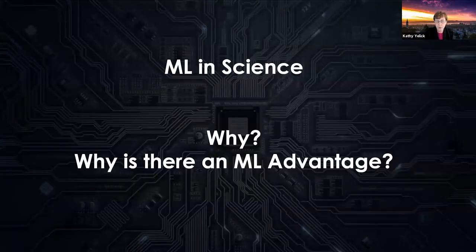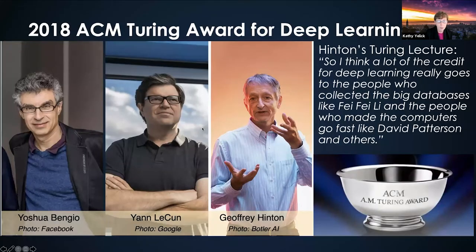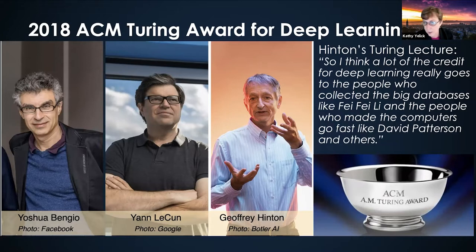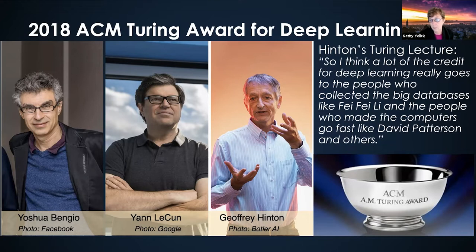Why is there a machine learning advantage in science? I'll quote from Jeff Hinton's Turing Award lecture, where he said that a lot of the credit for deep learning's success really goes to the people that collected the large data sets — like Fei-Fei Li — and the people who made the computers go fast — like David Patterson and others. The success of deep learning was really the combination of faster computers and understanding how to take advantage of those computers — mapping things like dense matrix multiply and narrow precision arithmetic onto these computers to get orders of magnitude speedup over the last couple of decades — plus labeled, curated, and very large data sets that can be used for training.